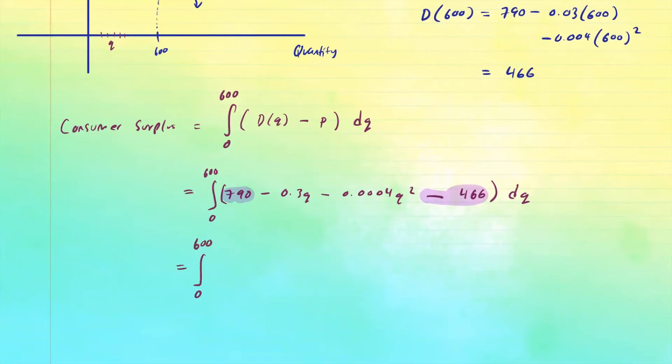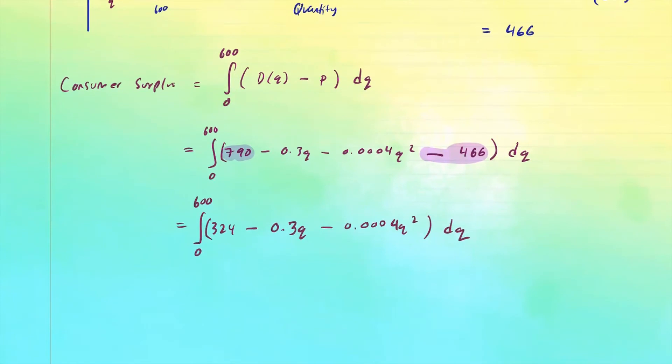So we're integrating 0 to 600 of, so 790 minus 466, that's about 324 minus 0.3q minus 0.0004q squared. And we're integrating this with respect to q. Now let's go ahead and integrate this.